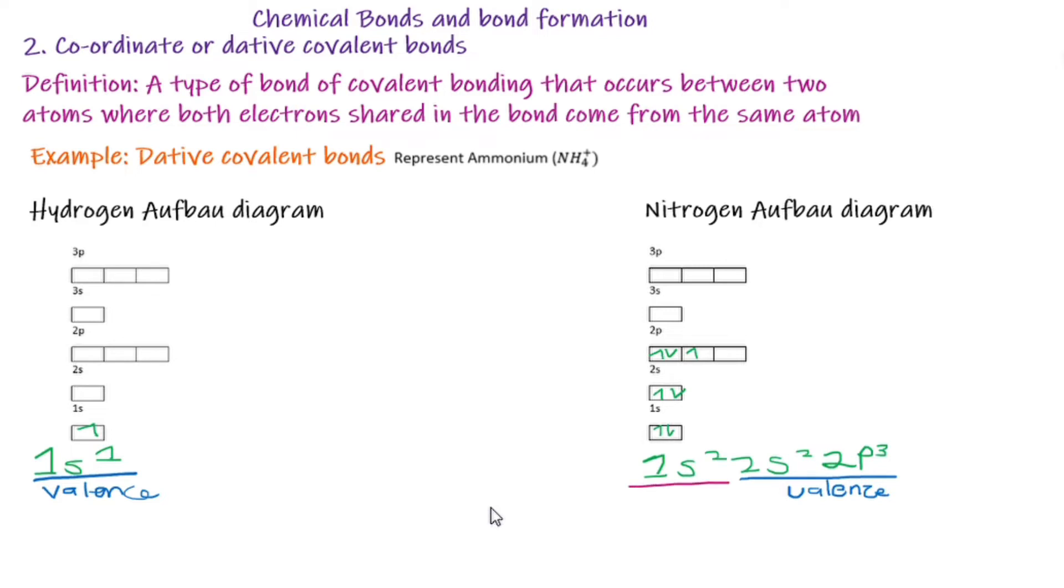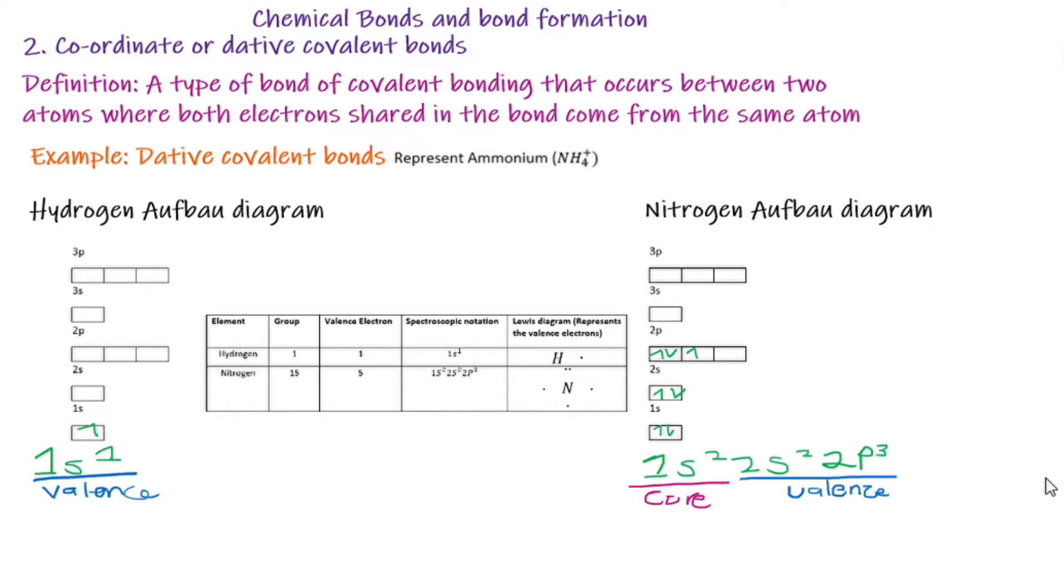If we were to nicely summarize this for ourselves: Hydrogen, element found in group one, has one valence electron. Its electron configuration is 1s¹ and Lewis dot diagram based on the valence electrons will only be one. Nitrogen, element found in group 15, has five valence electrons. Its electron configuration can be expressed as seen below, and its Lewis dot diagram is based on the valence electrons, so it's only five.